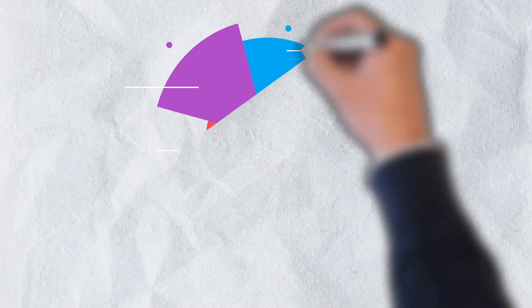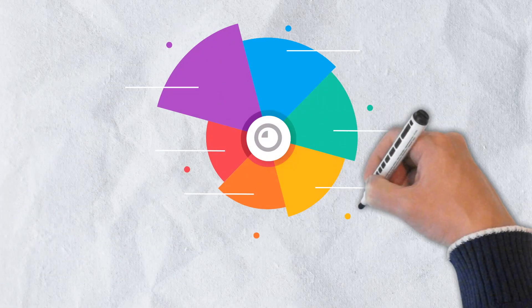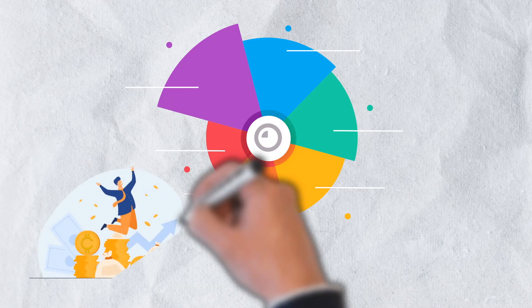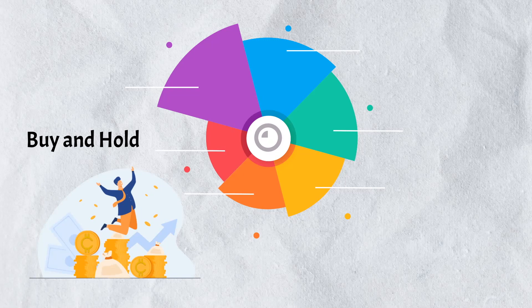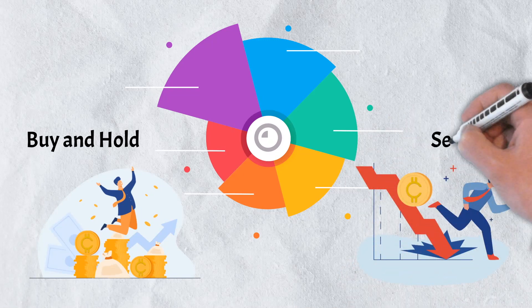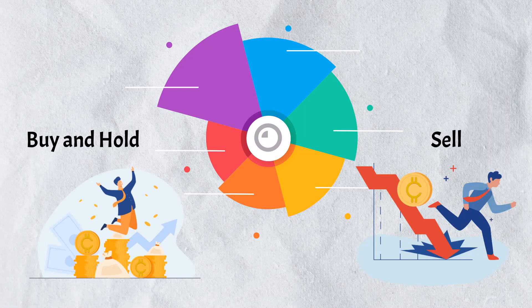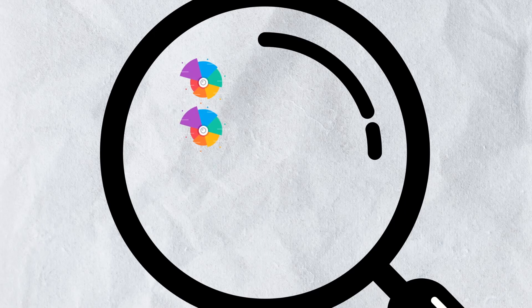Tokenomics are important when evaluating a project because tokens that have good tokenomics are much more likely to succeed in the long term because they incentivize buying and holding. Tokens with poor tokenomics are the opposite, they are doomed for failure because investors will rapidly sell them off at the first sign of trouble.